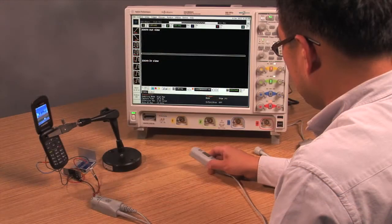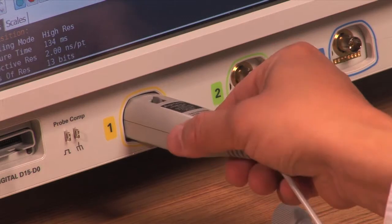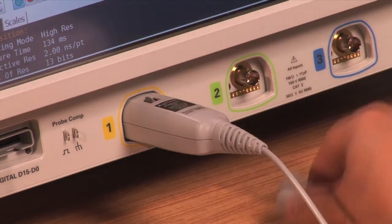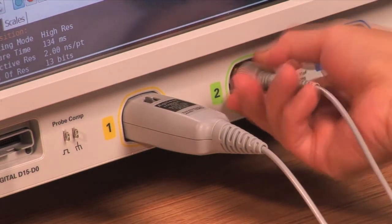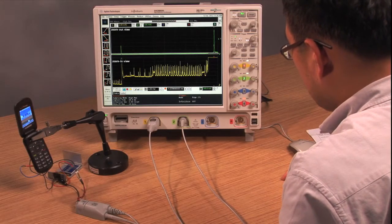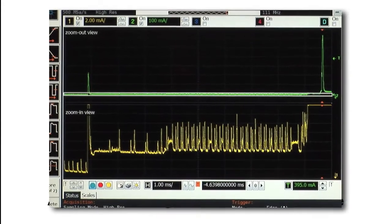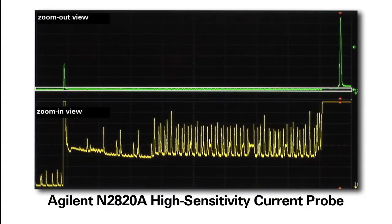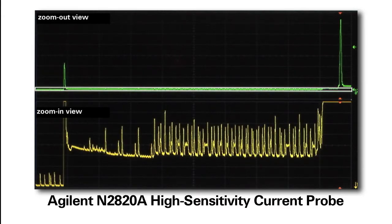Simply connect the probe's primary channel cable to one oscilloscope input channel and the probe's secondary channel cable to another channel. With Agilent's Infinium oscilloscopes, the N2820A provides for simultaneous high and low gain views of the current waveform. This results in a more precise wide dynamic range measurement.